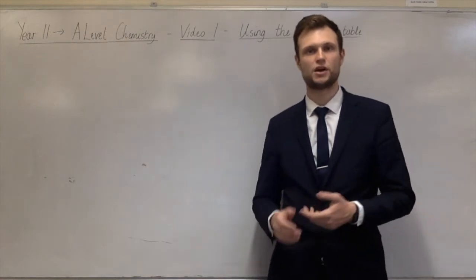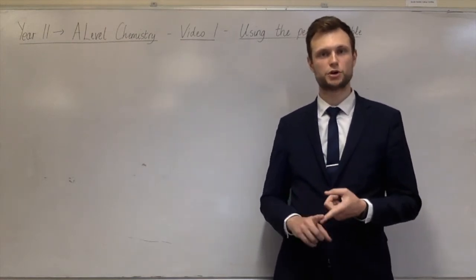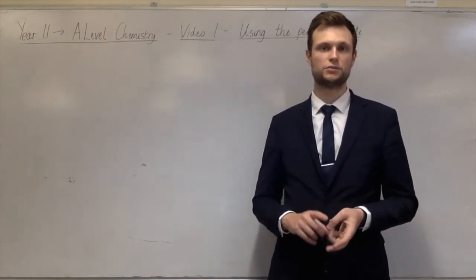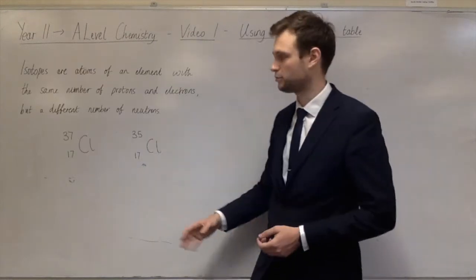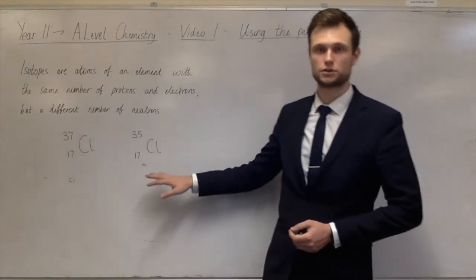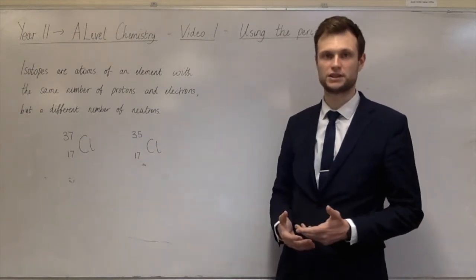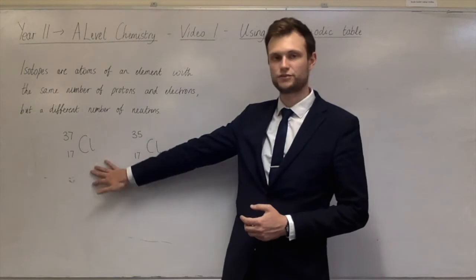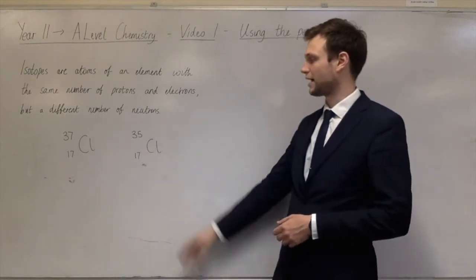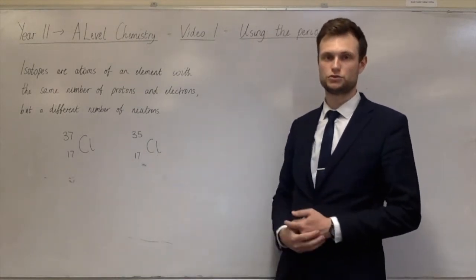Isotopes are atoms of an element which have the same number of protons and electrons but a different number of neutrons. And I've put an example here: chlorine-37 and chlorine-35. Now both of these have each got 17 protons and 17 electrons, but chlorine-37 has got 20 neutrons and chlorine-35 has got 18 neutrons.